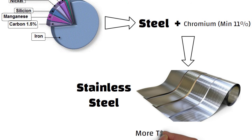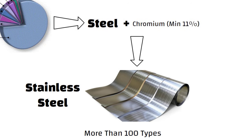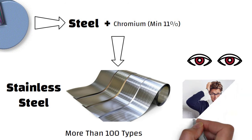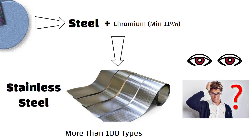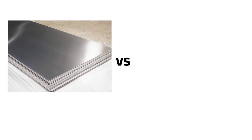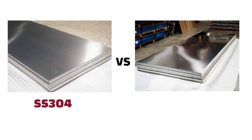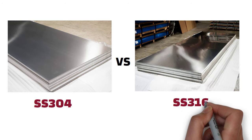There are more than 100 types of stainless steels available in the market. From a naked eye, it can be extremely difficult to tell the difference between different grades of stainless steel. In this video, we will discuss the differences between most widely used grades of stainless steels, i.e. SS304 and SS316.